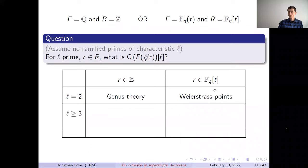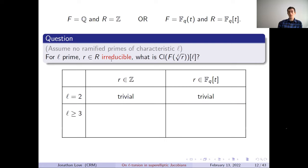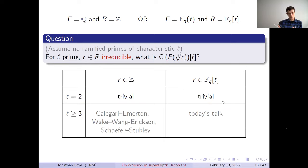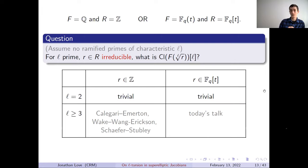Before moving to L≥3, I'll make a stronger assumption: I'm not just going to take an L-th root of R, I want to take an L-th root of an irreducible element. Under this assumption and with no ramified primes of characteristic L, the 2-torsion becomes trivial — analogous to saying y² equals a degree-three irreducible cubic gives no non-trivial 2-torsion on the elliptic curve. However, even under this assumption, we do get non-trivial L-torsion when we adjoin L-th roots. Any questions about the setup so far?